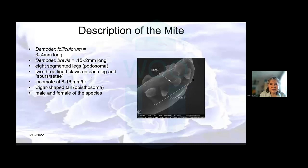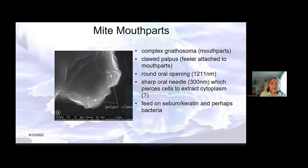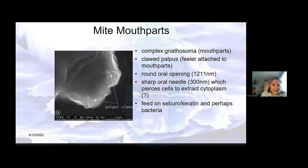The cigar-shaped tail — and there is a male and female of the species. They have little spurs which help in locomotion but also help them to anchor in the site they finally deliver to. The mite mouth parts are quite sophisticated for something so little: a complex mouth with feeding claws to anchor and to move, and an oral opening with a sharp oral needle that is thought to pierce cells to either extract cytoplasm, feed on sebum, or feed on keratin, or perhaps even the bacteria on the host they reside on.